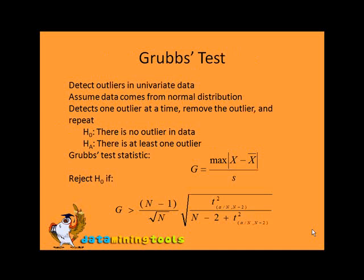Let's understand Grubbs' test. First, detect outliers in univariate data. Assume data is coming from a normal distribution. Then detect one outlier at a time and remove the outlier and repeat.